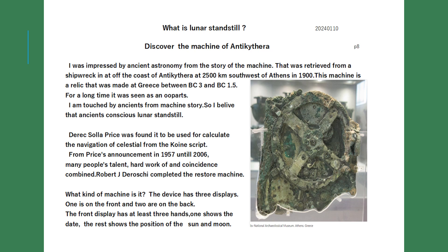I was impressed by ancient astronomy from the story of the Antikythera machine — a device retrieved from a shipwreck off the coast of Antikythera, about 2,500 kilometers southwest of Athens, in 1900. This machine is a relic made in Greece between approximately 300 BC and 150 BC. For a long time it was seen as mere parts. I am touched by the ancients from this machine's story, and I believe that the ancients were conscious of lunar standstill. Derek de Solla Price identified it as a device for calculating celestial navigation. From Price's announcement in 1957 until 2006, the combined talents and hard work of many people — plus coincidence — allowed Robert J. Derishi to complete a restored machine. The device has three displays: one on the front and two on the back. The front display has at least three hands — one shows the date, and the others show the positions of the sun and moon.